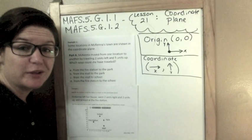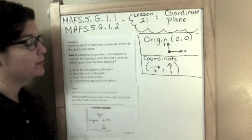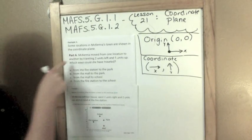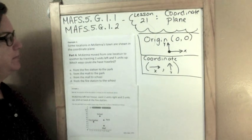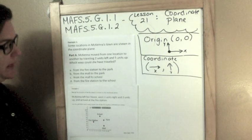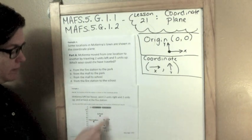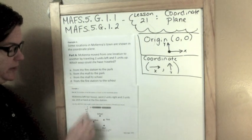Alright, I've moved the camera in just a little bit so that way you can see the problem a little bit better here. So example one has a part A and a part B. Let's go ahead and read it. It says some locations on McKenna's town are shown in the coordinate plane. This is it. This is called a coordinate plane.